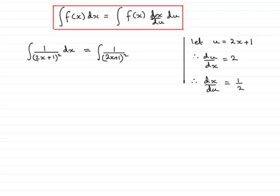In place of dx, we now have dx du, and dx du is a half. So put a half there, and then we have the du on the end.